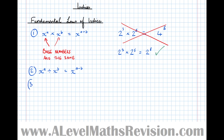Finally, the most misused rule: x to the power of A, all to the power of B — where you've got a power attached to a bracket. When you have one like this, it becomes x to the power of A times B. So when something in a bracket is raised to a power, we multiply the indices together.